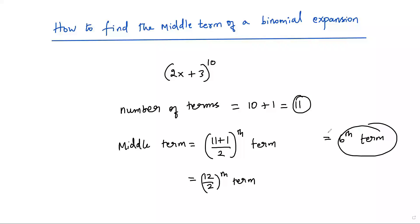So if you want to find the middle term of a binomial expansion, first you must know the number of terms in the expansion — simply add one to the exponent. Then to find the middle term, add one to the number of terms and divide by two, and whatever number you get represents which term is the middle of the expansion.